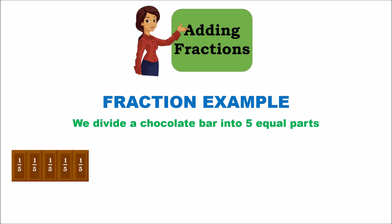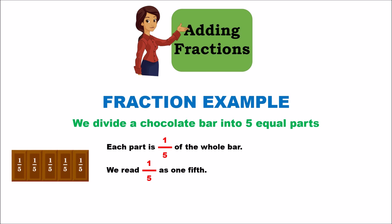We've cut our chocolate bar here and divided it into 5 equal parts. Each part is 1 fifth of the whole bar, because we took the whole bar and divided it into 5 equal parts. We read 1 by 5 as '1 fifth.' The whole bar has five 1-fifth parts, so five 1-fifths is basically 1 full chocolate bar, and we can also write 1 as 5 by 5.